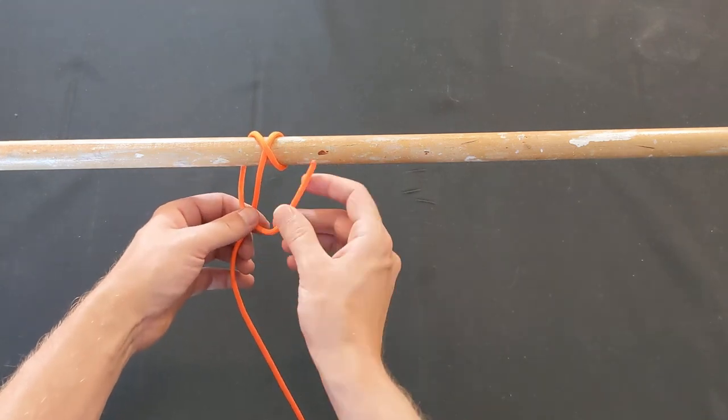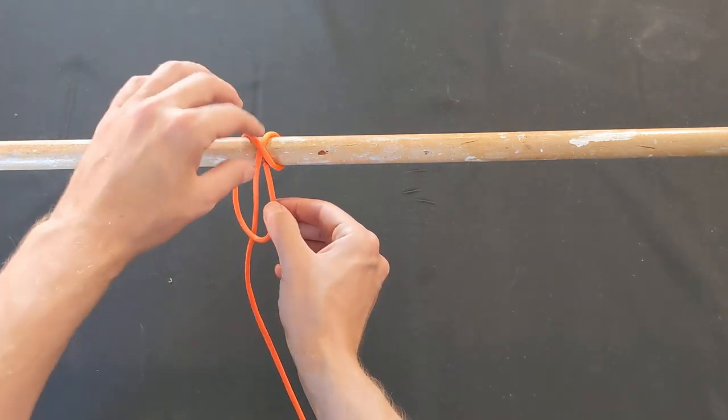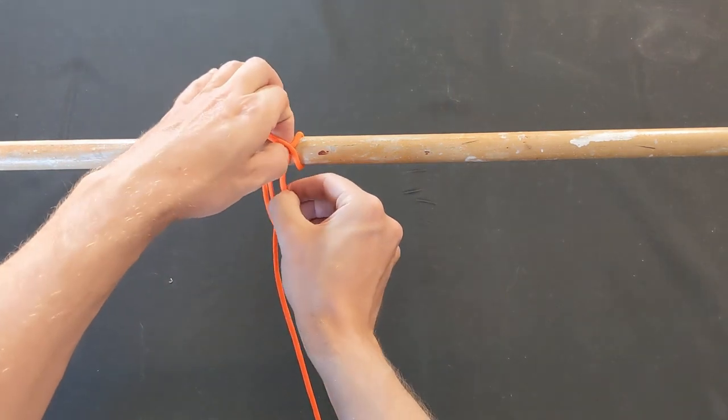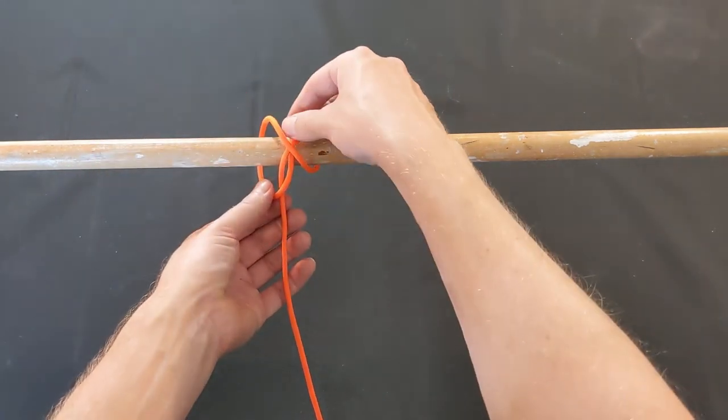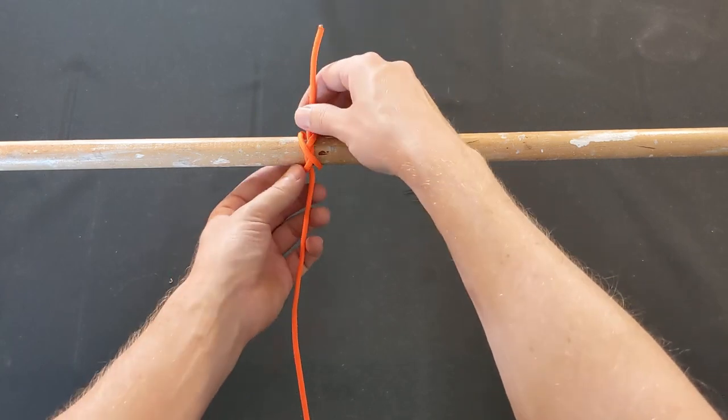Bring the line back around underneath the object and over top of the working end. Then thread the line under the middle of the X you created. Cinch it down by pulling both ends, and you have a constrictor knot.